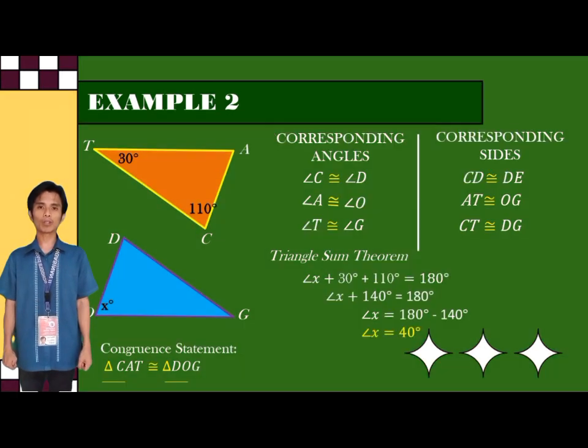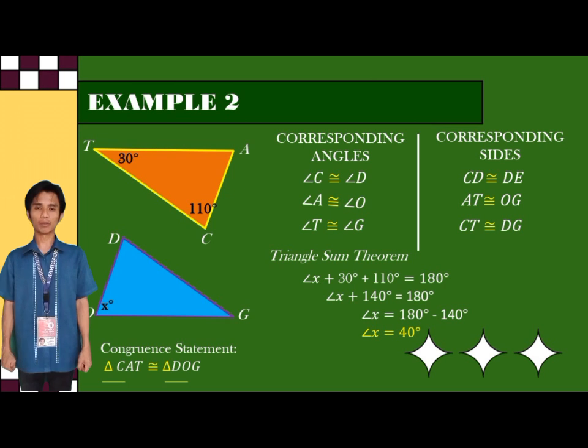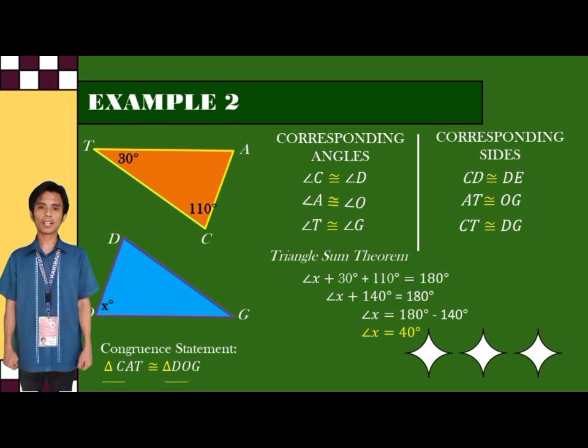And now, we will combine like terms. And we will get angle X is equal to 180 degrees minus 140 degrees. Therefore, angle X is equal to 40 degrees.